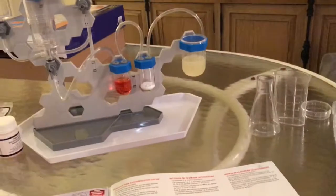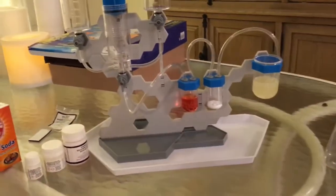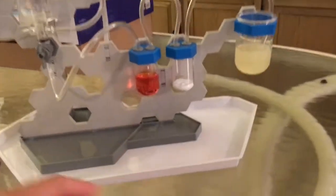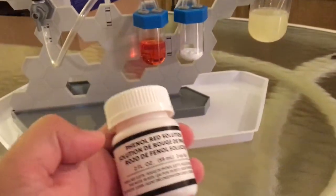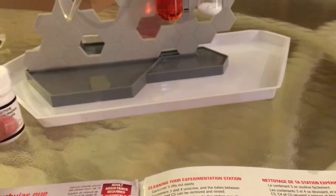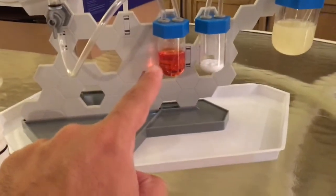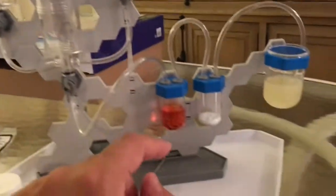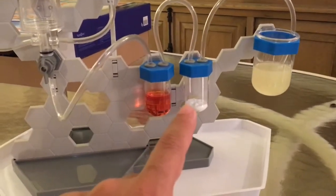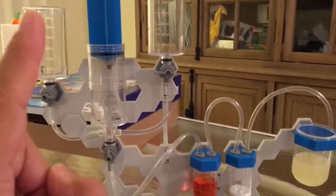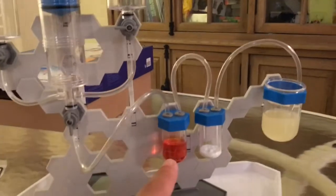So this one was pretty straightforward. Just fill the plunger with air, have some of the phenol red solution right in container C3, and then have some baking soda in C4, and have some lime water in C5. And so once you push the air, it's gonna mix.